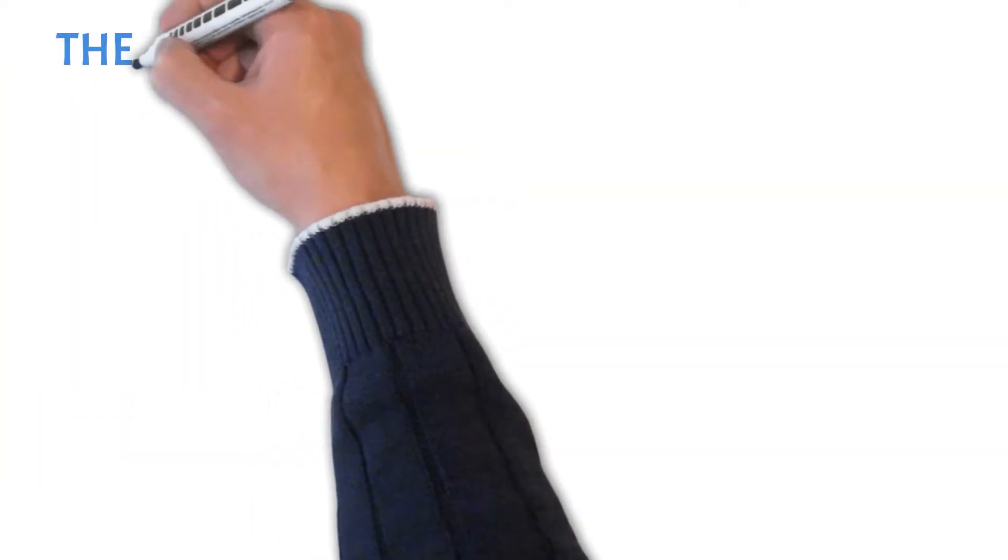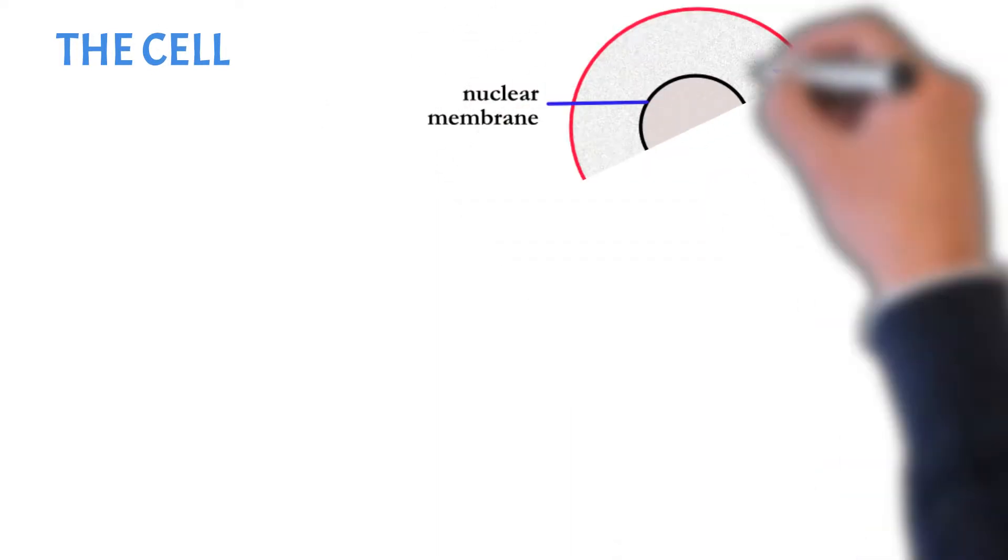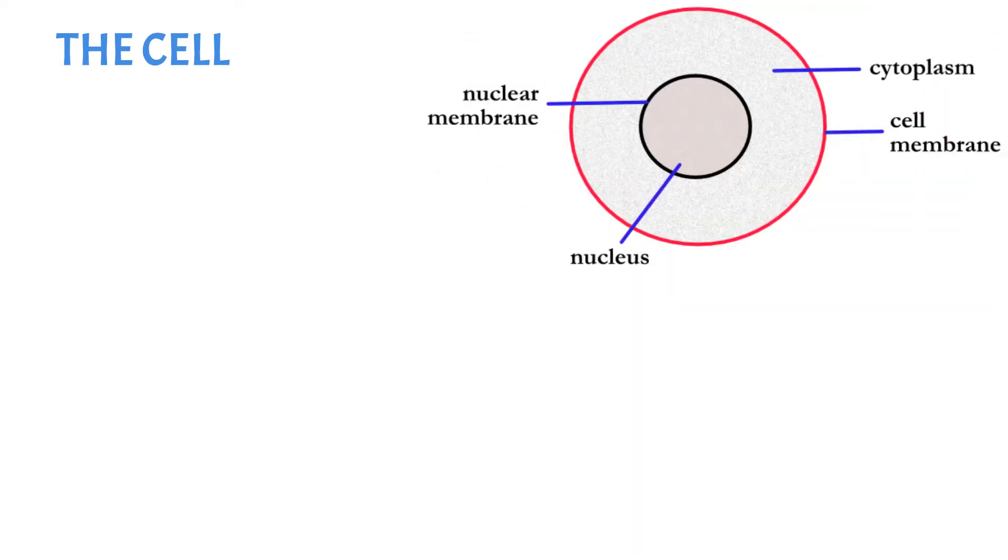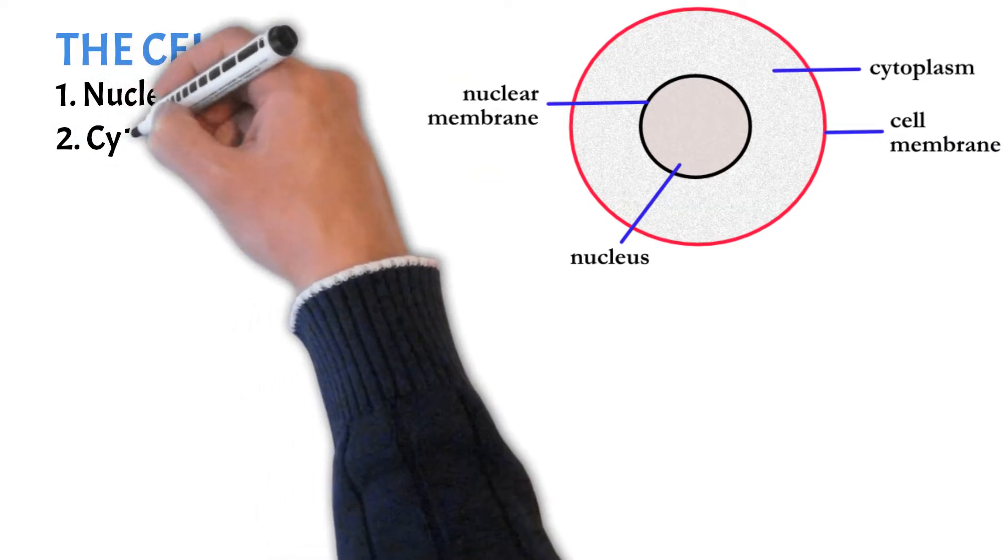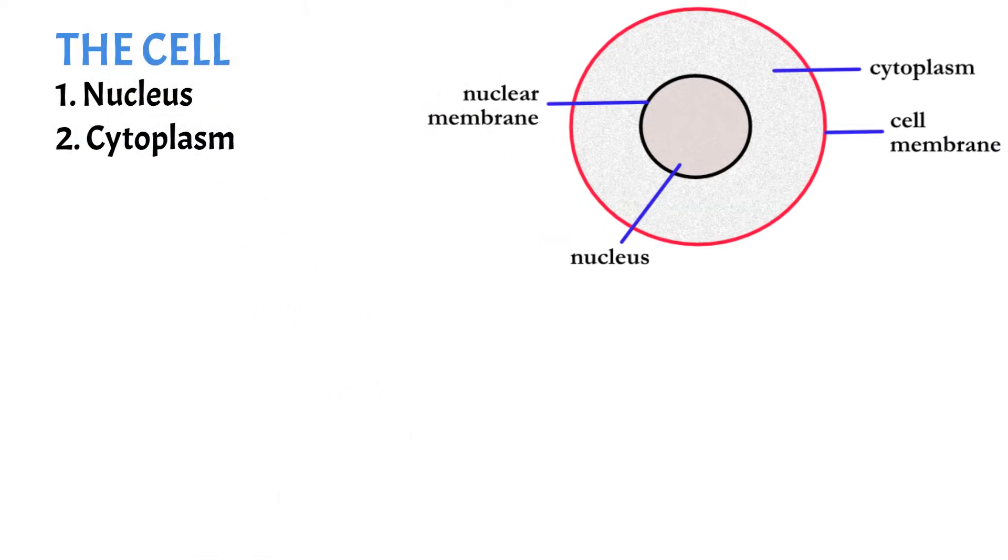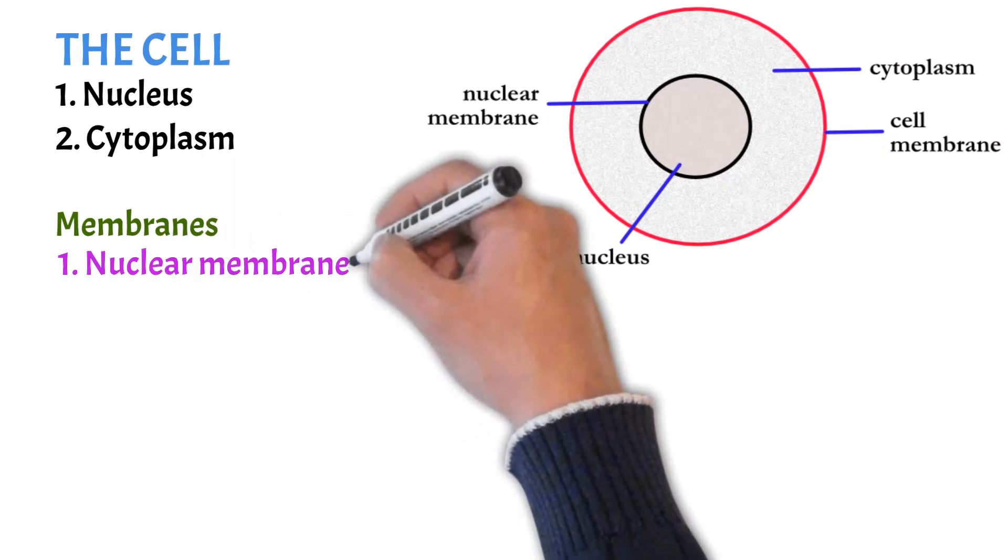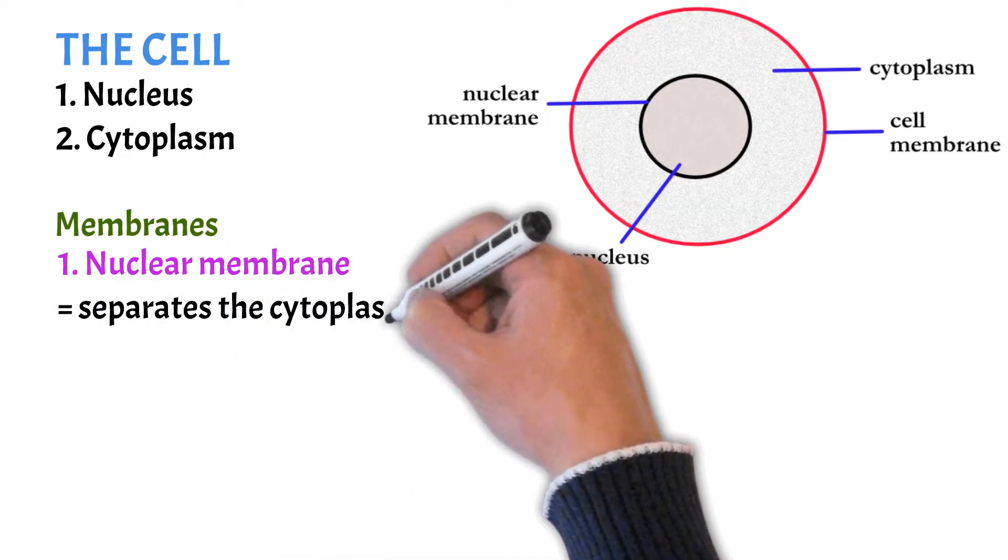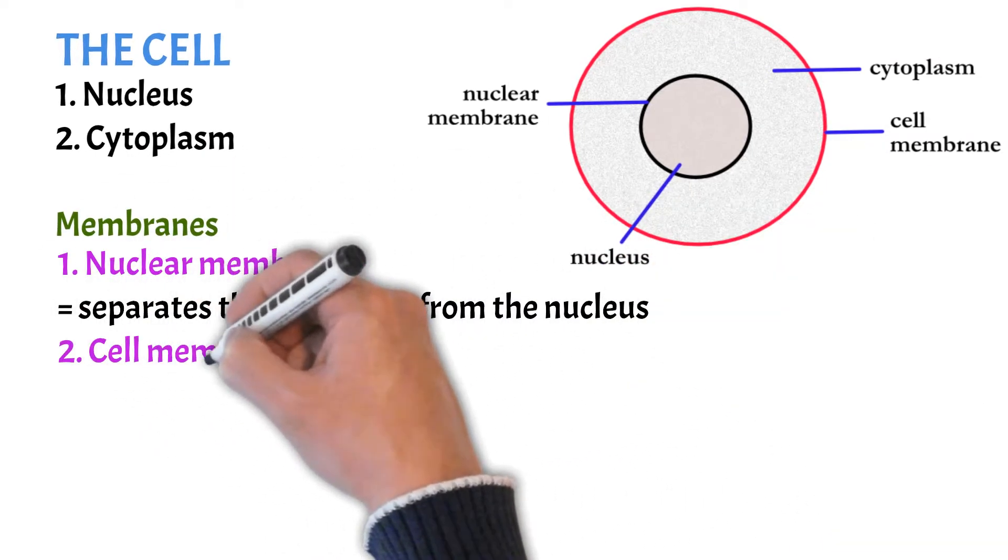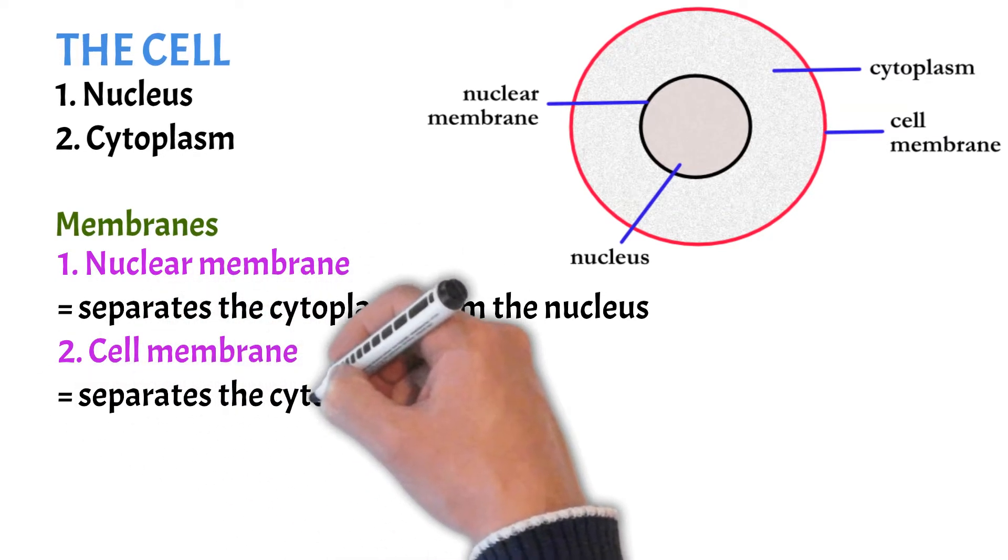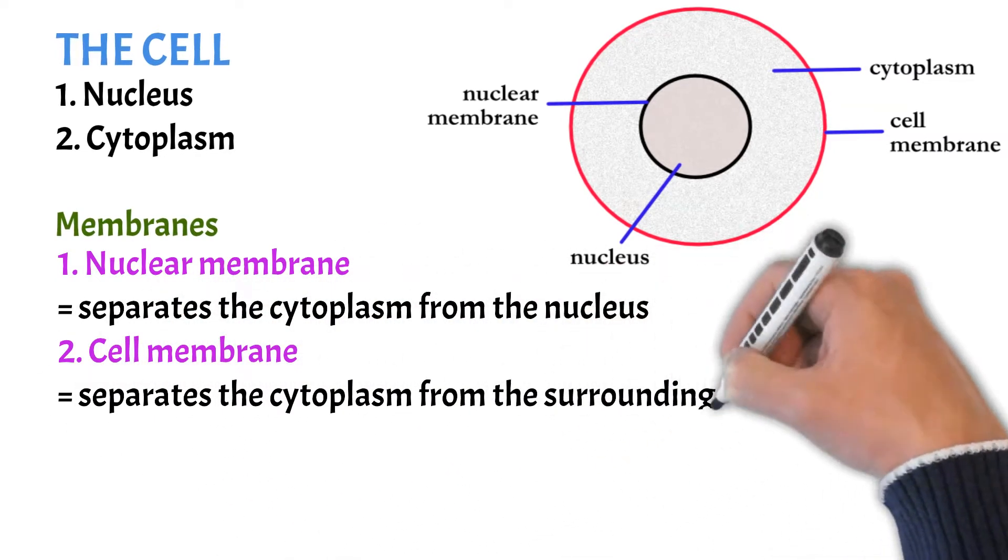Let's start by looking at the way the cell is organized. The cell has two major components, the nucleus and the cytoplasm. They both have a membrane. The nuclear membrane separates the cytoplasm from the nucleus and the cell membrane separates the cytoplasm from the surrounding fluids.